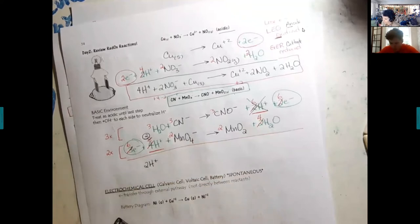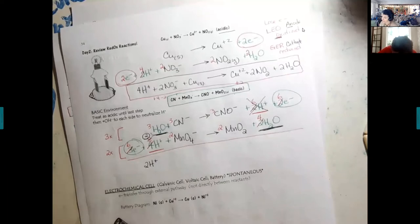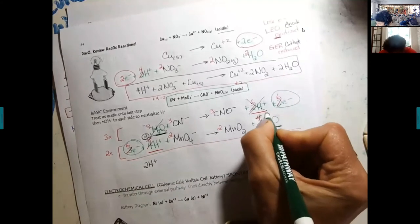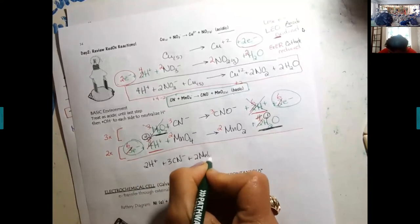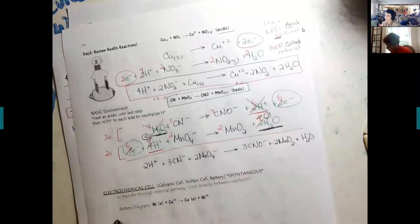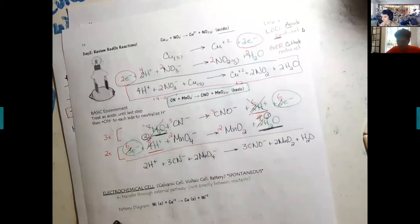The same thing is going to happen with the waters. You have three waters on the reactant side and four waters on the product side, so the three are going to cancel. I would do it lightly - I would not erase. That four becomes a one. So I have two hydrogens, three cyanides, two permanganates, and then three cyanates and just one water. That would be correct if it was acidic.